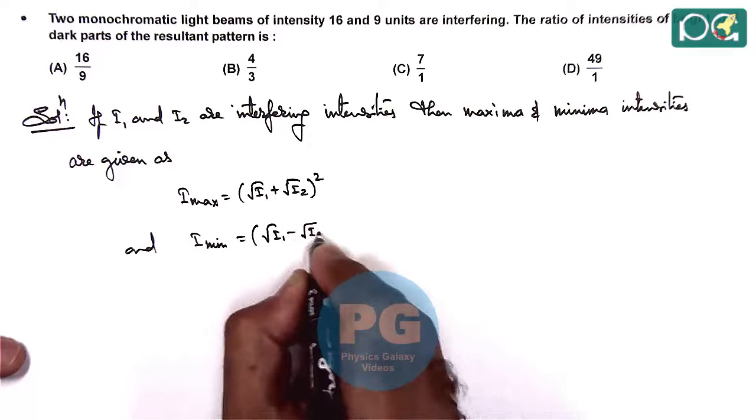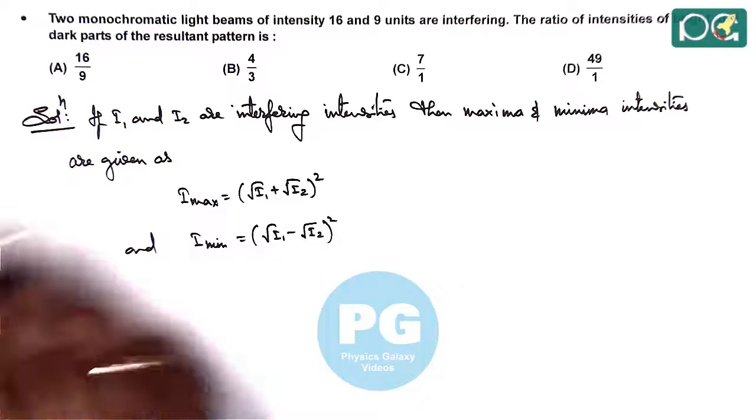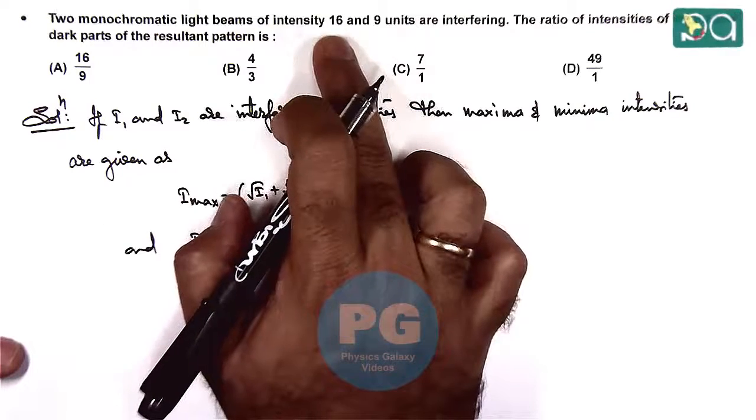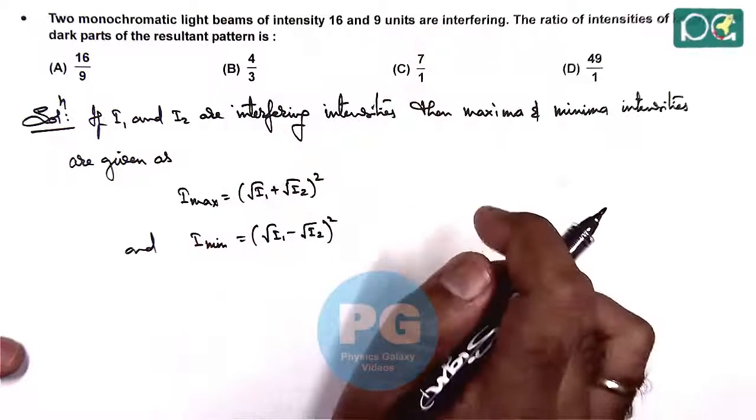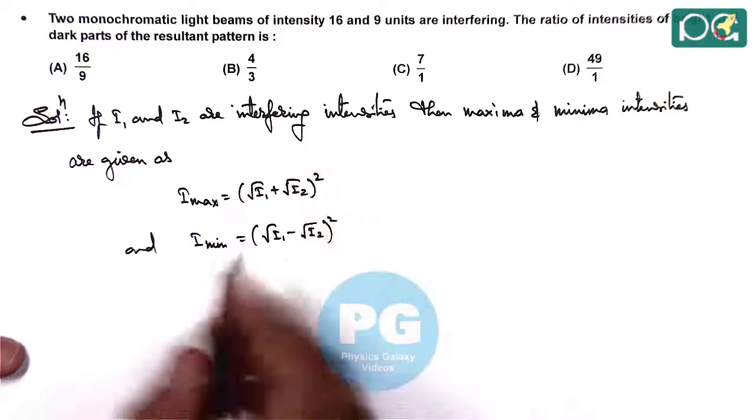Here, I1 and I2 are given as 16 and 9 units, so we are required to calculate the ratio.